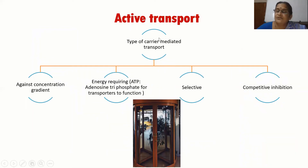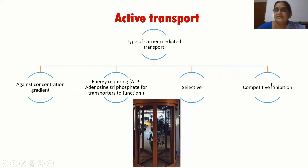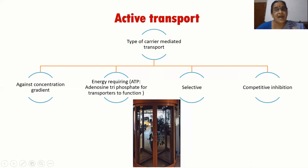Active transport also involves carrier mediation, but this carrier needs energy — adenosine triphosphate, the currency of the cell. This mechanism can also work against the concentration gradient. It is carrier-mediated, selective, and subject to competitive inhibition from similar molecules. Think of it as a motorized revolving door that requires energy to move rather than being pushed manually. This causes active transport of the radiopharmaceutical from outside to inside the cell.